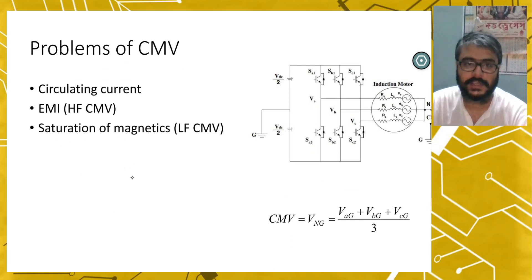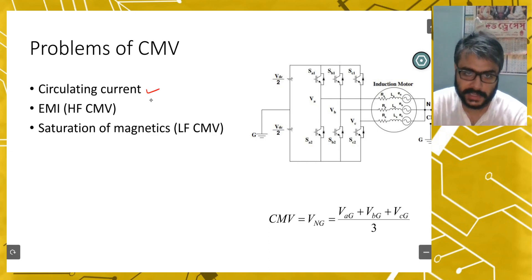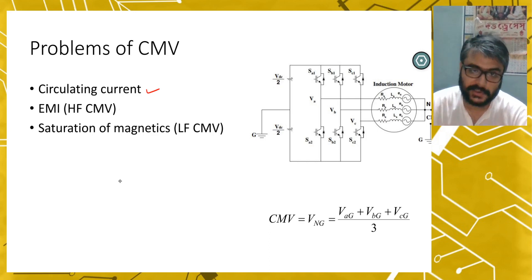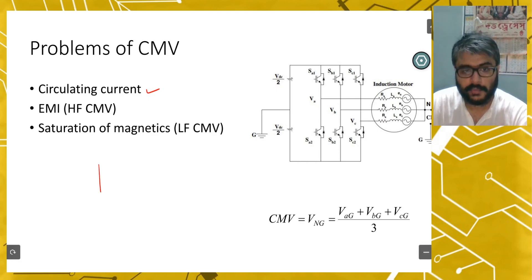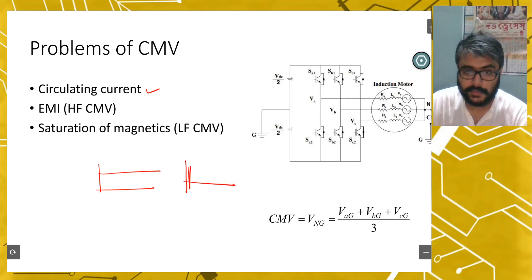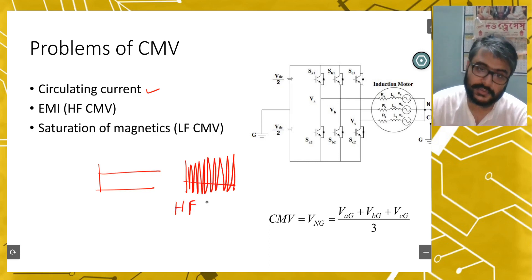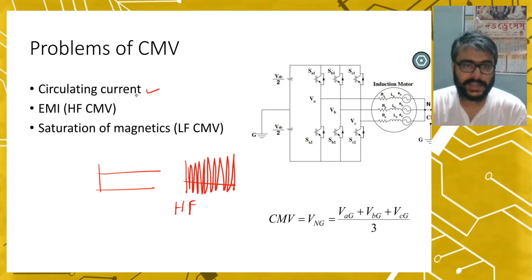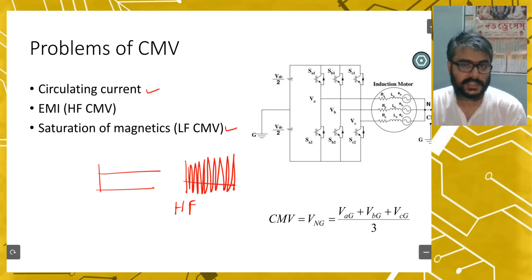What are the problems of common mode voltage? An important, actually very important problem is circulating current, which we will talk about later. And electromagnetic interference — this is due to high-frequency common mode voltage. When there are very high-frequency oscillations in common mode voltage, this will create issues. This circulating current may also create issues like saturation of magnetics.